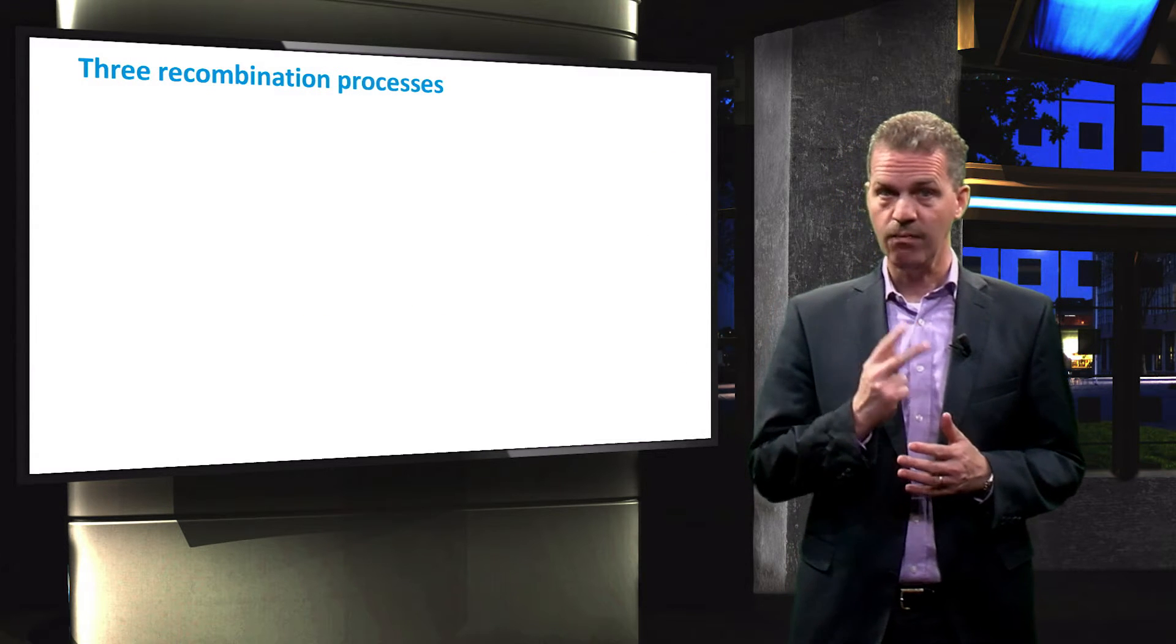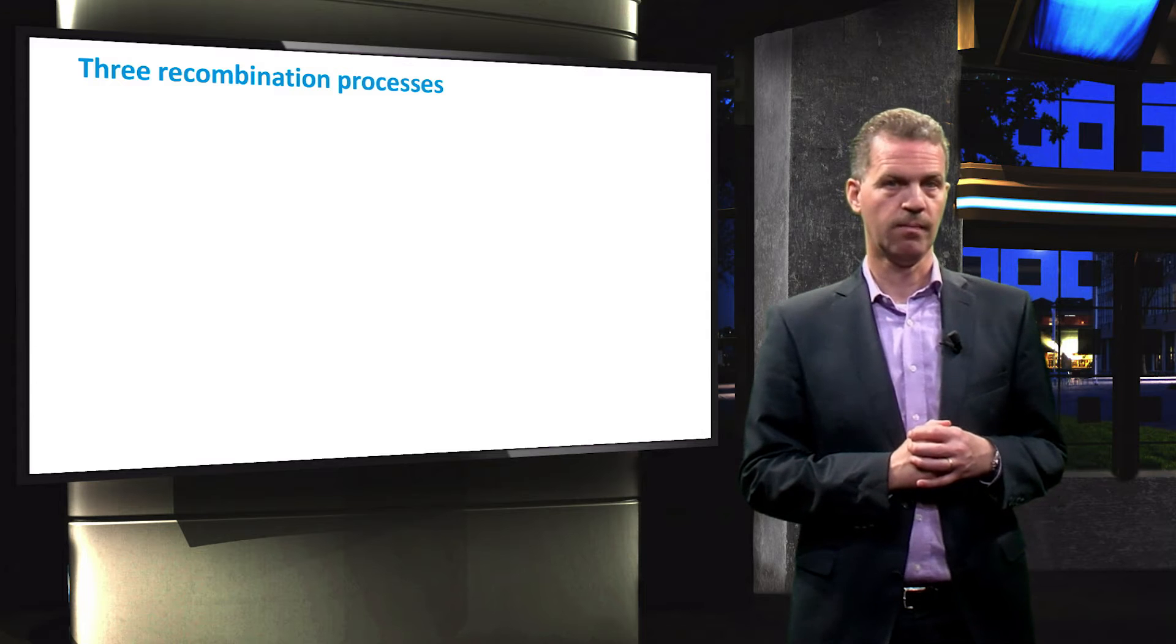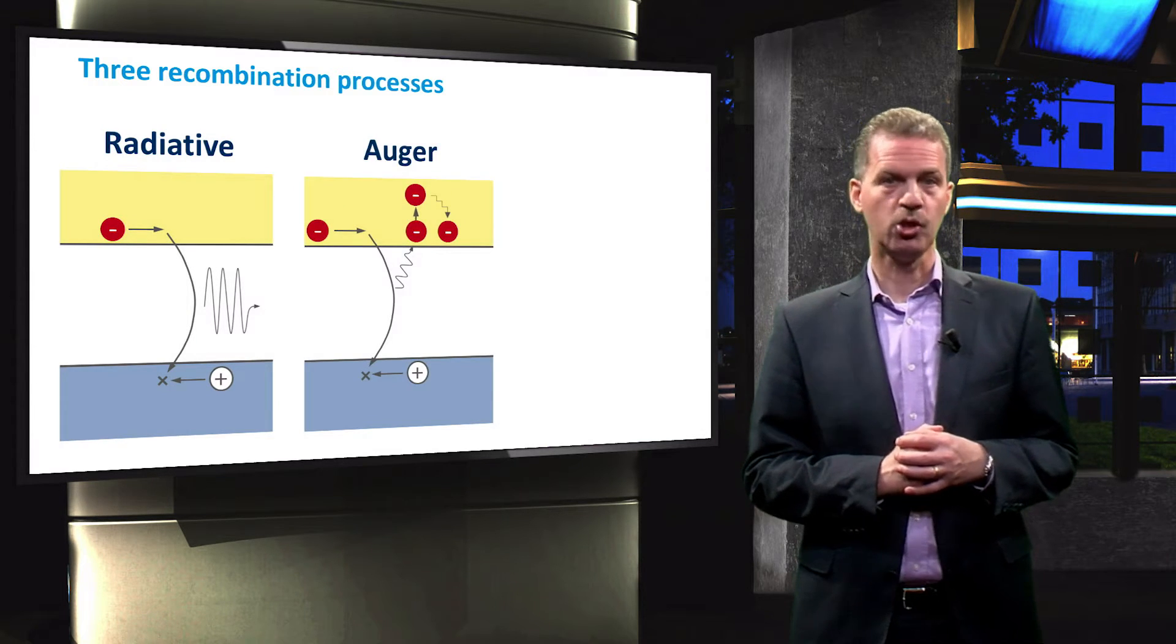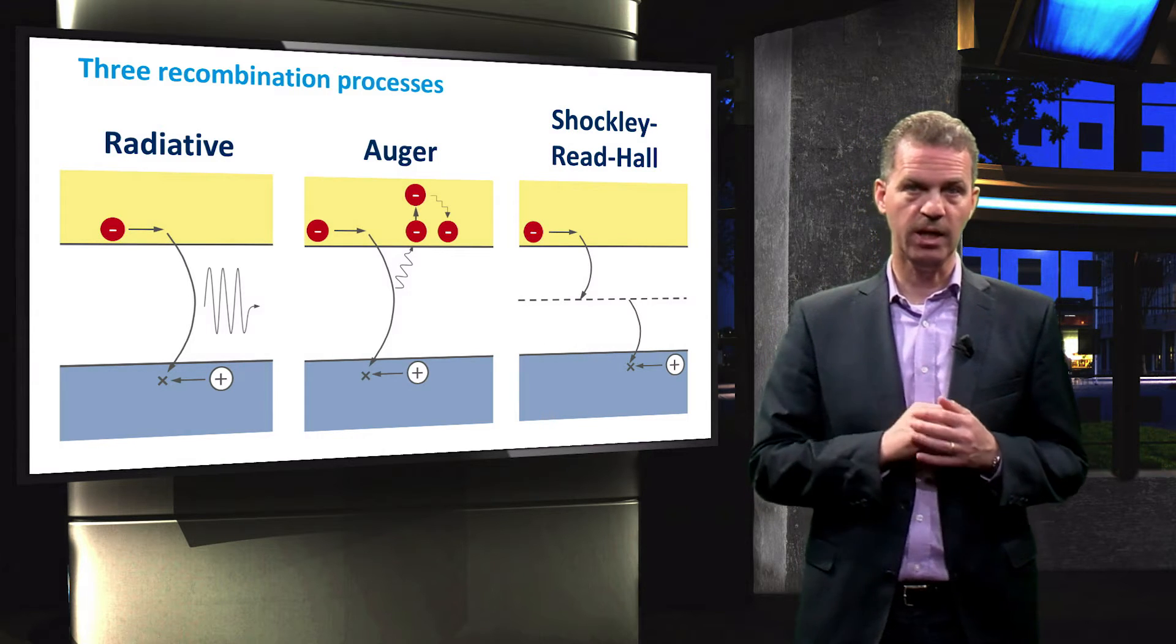There are three different recombination processes: Radiative, Auger, and Shockley-Read-Hall recombination. In this video, we will discuss radiative recombination and Auger recombination only.